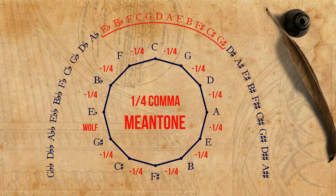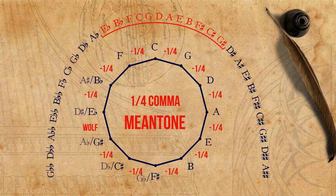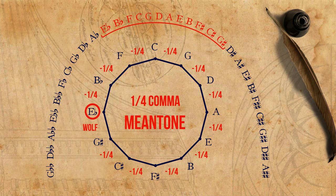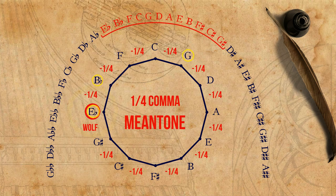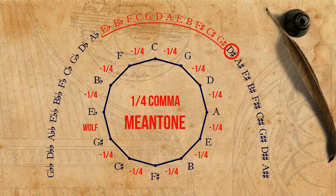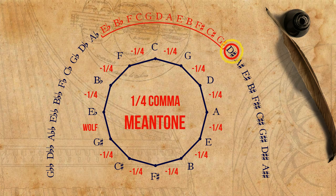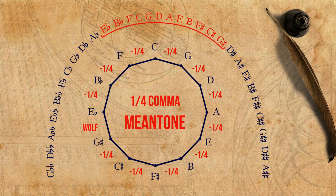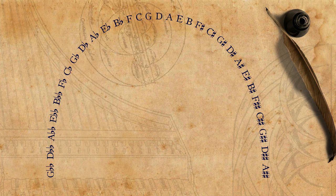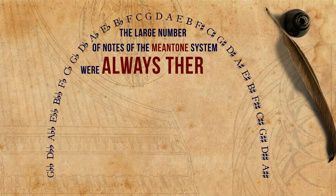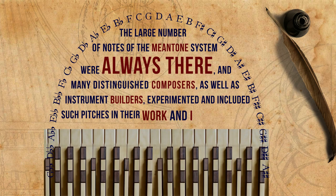As opposed to equal temperament, where we choose the same pitch for different notes — the so-called enharmonics — in meantone every note has its own pitch. In other words, E-flat, for example, is not the same pitch as D-sharp. Here is how E-flat sounds in a quarter-comma meantone temperament. And here is how D-sharp sounds. It is true that most of the music did not employ more than 12 pitches. Some even employed fewer than 12 pitches. The number 12 was not important. However, the large number of notes of the meantone system were always there, and many distinguished composers as well as instrument builders experimented and included such pitches in their work and instruments.